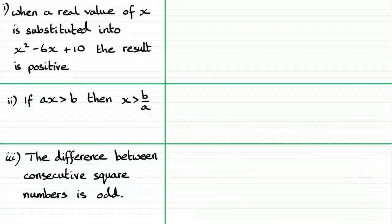OK, so for this question we've got three statements here which we've got to say are they always true, sometimes true, or never true. For this first one, when a real value of x is substituted into x squared minus 6x plus 10, the result is positive.